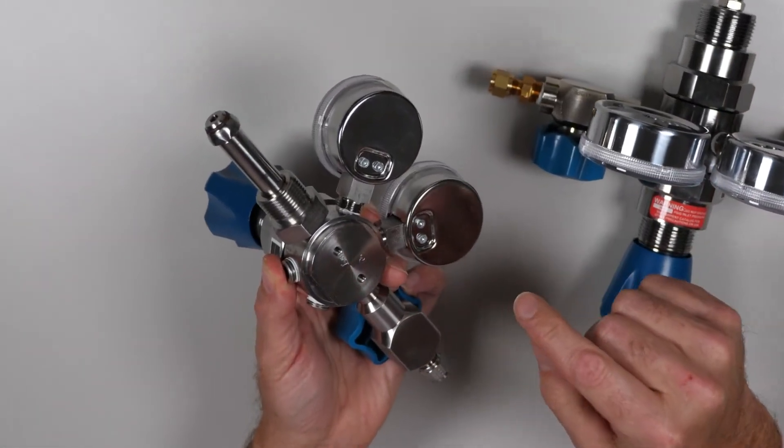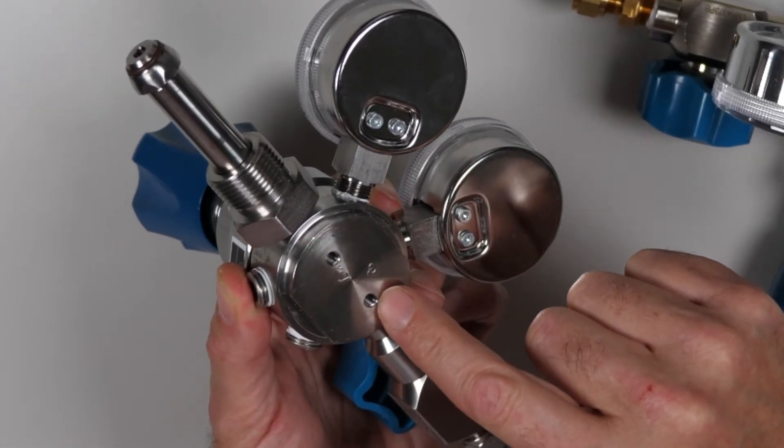Most single-stage regulators have two 10-32 mounting holes in the back, typically spaced seven-eighths of an inch apart.